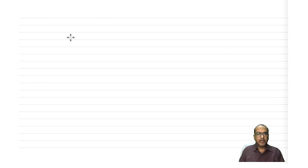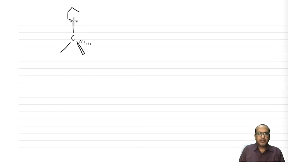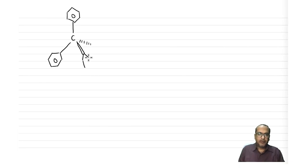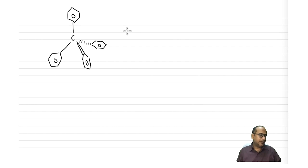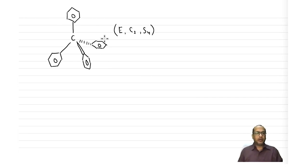Another example for Sn point group has four phenyl rings connected to a central unit. These phenyl rings are not exactly in-plane: half of each ring comes out of the plane of the board and half goes back, something like a propeller. In this case the symmetry elements are E, C2, and S4, making it an S4 point group, which is also an S2n type.